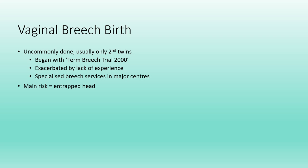The main risk with vaginal breech birth is an entrapped head. In a normal cephalic delivery, the cervix needs to dilate fully to 10 centimeters to allow the head — the largest diameter — to pass through. In a breech presentation, the cervix doesn't need to be fully dilated for the bottom, legs, and rest of the body to pass through. If the head can't be delivered because it's stuck behind an incompletely dilated cervix, this is called an entrapped head.